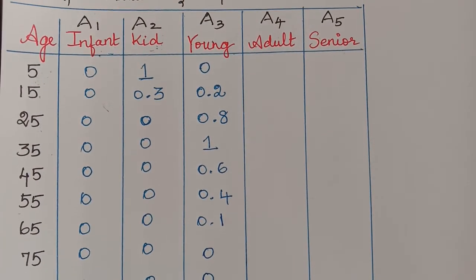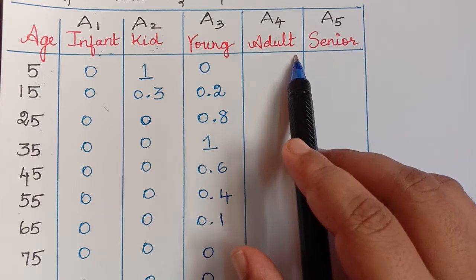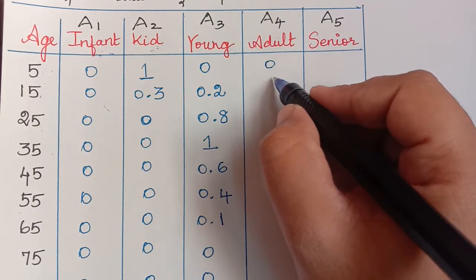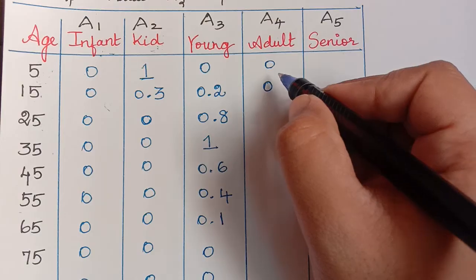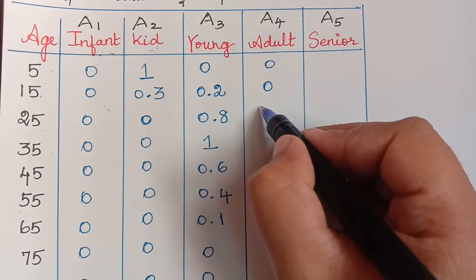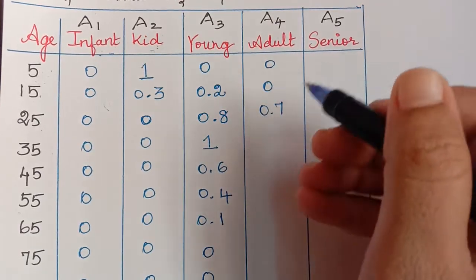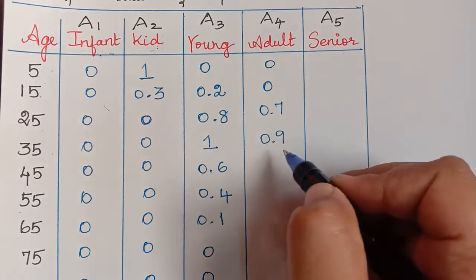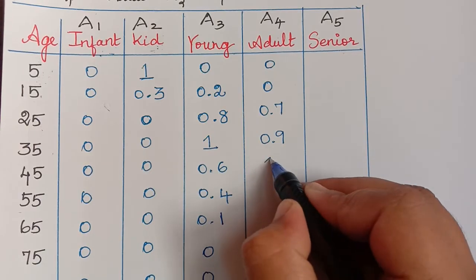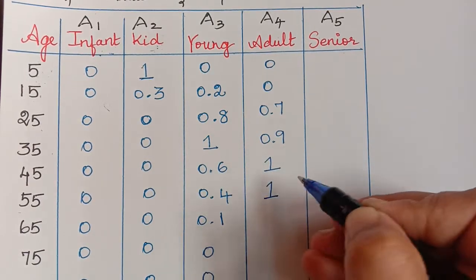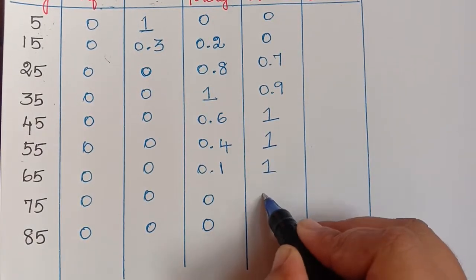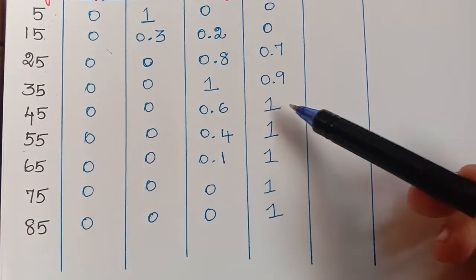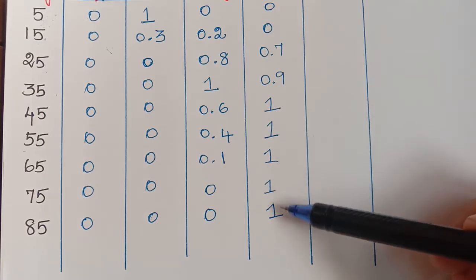For fuzzy set A4 (adult): ages 5 and 15 get 0 as definitely not adults. Age 25 gets 0.7 as growing toward adult, age 35 gets 0.9 as almost adult, and from age 45 onward everyone gets full membership 1, as they are fully adult.